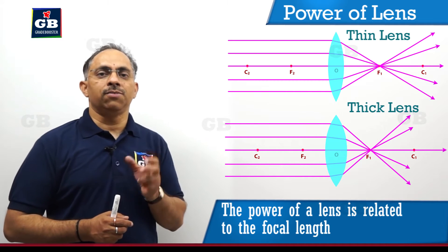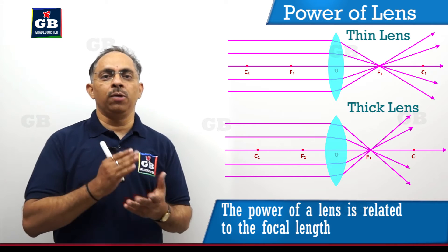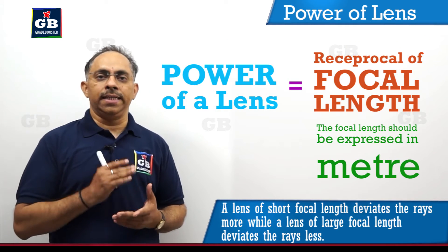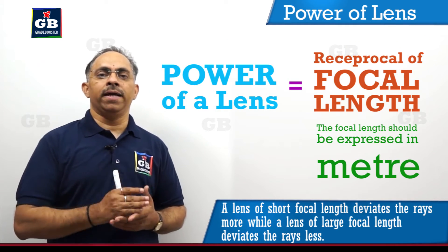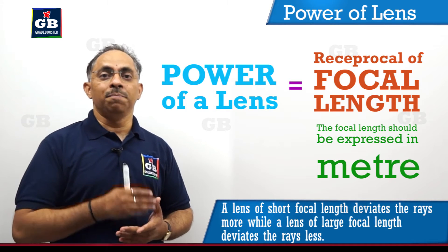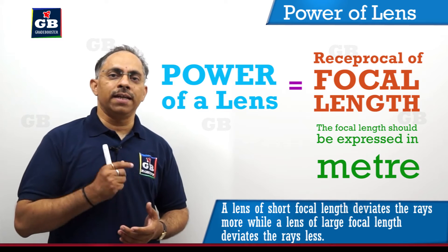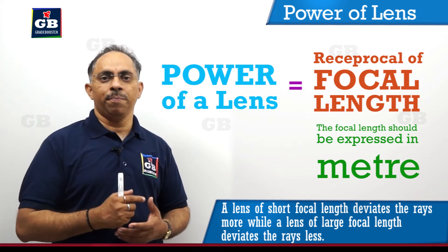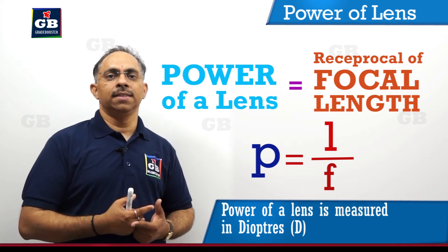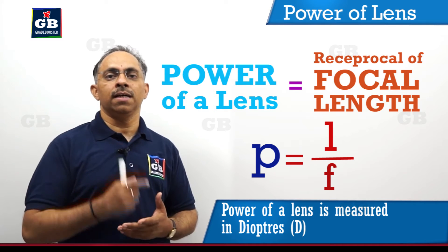So in that case, what I will do is try to compare the power of two lenses. How do I know the power of the two lenses? The power of a lens is given by the reciprocal of the focal length. The focal length should be expressed in meters and not centimeters. If I take the reciprocal of the focal length of a lens, then this reciprocal of the focal length is known as the power.